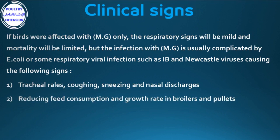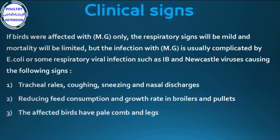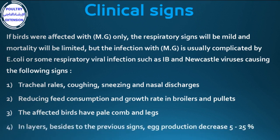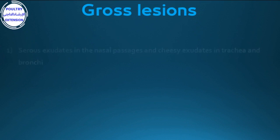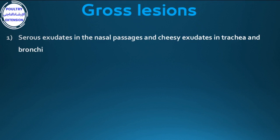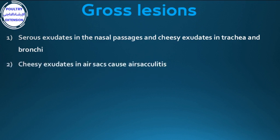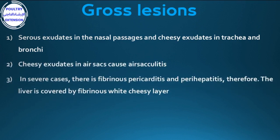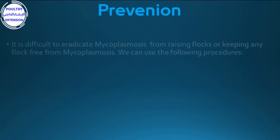Two: reduced feed consumption and growth rate in broilers and pullets. Three: affected birds have pale comb and legs. Four: in layers, besides the previous signs, egg production decreases by 5 to 25%. Gross lesions: serous exudate in the nasal passage and cheesy exudate in trachea and bronchi; cheesy exudate in air sacs causing air sacculitis; and in severe cases, fibrinous pericarditis and perihepatitis, where the liver is covered by a fibrinous white cheesy layer.